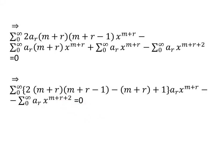Looking at this equation carefully, to arrive at this form we combined the three terms with x to the power m plus r. Taking x^(m+r) common, the coefficients collected are 2(m+r)(m+r−1), minus (m+r), and plus 1, with a_r x^(m+r) as the common factor. The fourth term is kept as it is. This equals 0.